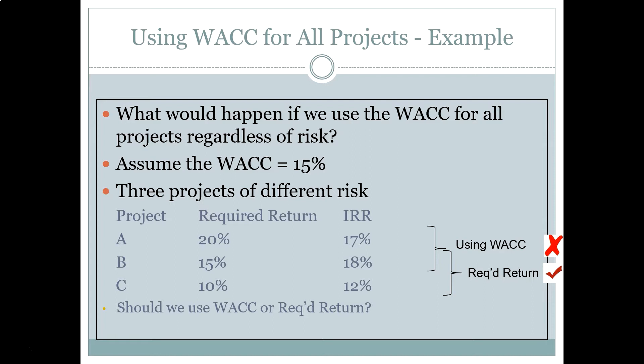The problem with using WACC when we have differing risk levels across our firm is that WACC is the average, and the average is going to be higher than the low-risk projects. So if I use WACC and replace the listed required returns with 15% for all of them, because WACC is the required rate of return for the firm, the analysis changes.